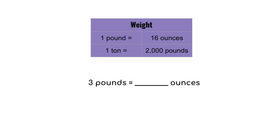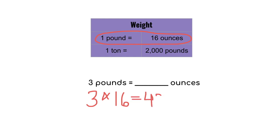This last weight problem has us going from pounds to ounces. So we're starting with three pounds, and we're multiplying because we're going from a larger unit of pounds to a smaller unit of ounces. We use the conversion one pound equals 16 ounces. So we multiply three times 16, and we get a final answer of 48. Three pounds equals 48 ounces.